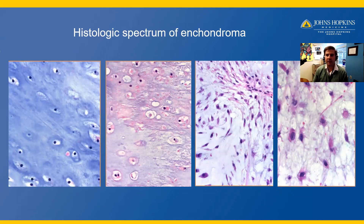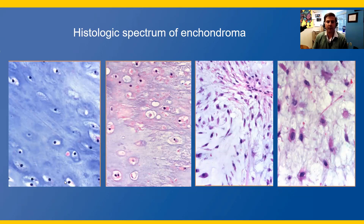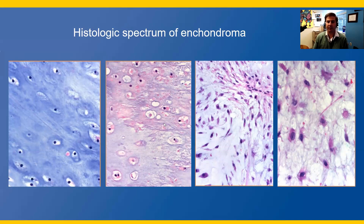The histologic spectrum of enchondromas is interesting. On the left, cells are quite small and lymphocyte-like. In the left center, you may find an occasional binucleated cell. In the right center, some cells may be spindled and relatively hypercellular. On the far right, you may have some cytologic atypia. Cytology itself is not specific for enchondroma versus chondrosarcoma — you need correlation with radiographs and the low-power permeative growth pattern that is seen in chondrosarcomas but not in enchondromas.